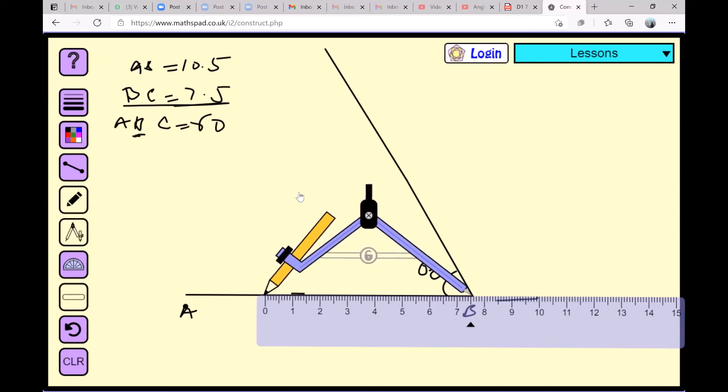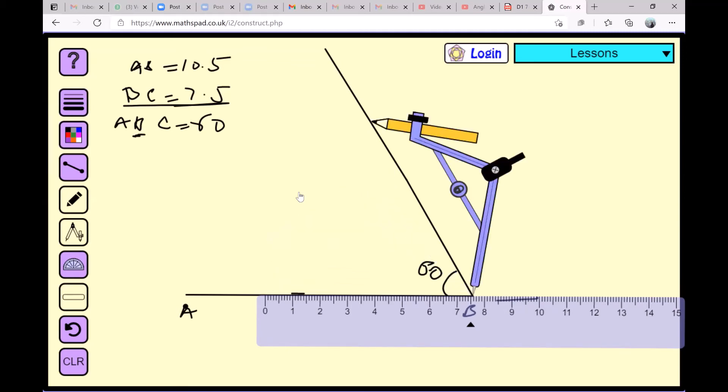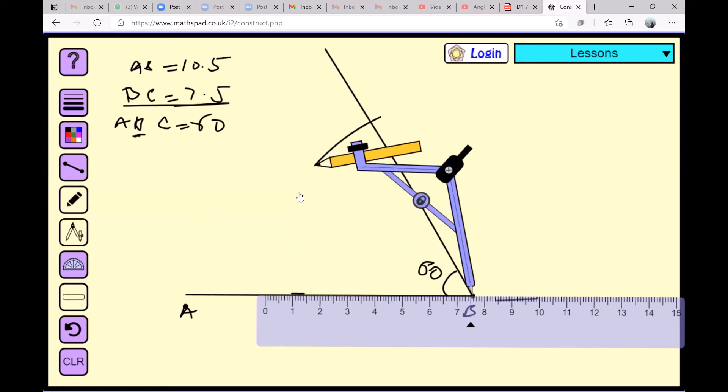This is 7.5. I will lock my compass and I'll draw an arc that is exactly equal to 7.5. Now the point that is like that you just made, is that C? Yes, this point is C. We have got our C point.